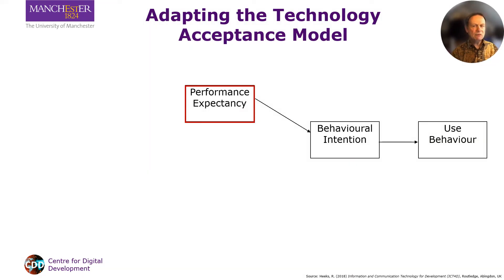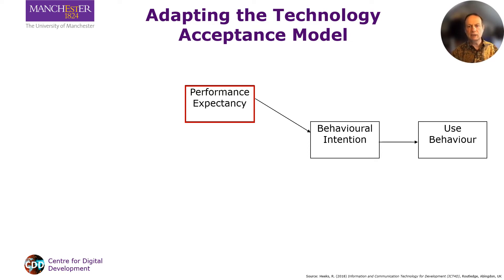We can modify the widely used technology acceptance model to put a bit more flesh onto this very basic idea and to understand the shapers and the consequences of the prime question. In this model, the prime question is performance expectancy — or in other formulations, perceived usefulness — the benefit that users expect to get from the technology. This expectation informs their intention to use or not to use, which in turn determines their behavior of actually using or not using the technology.